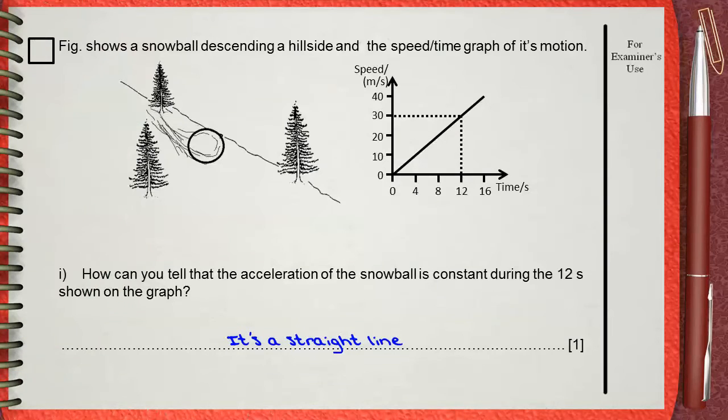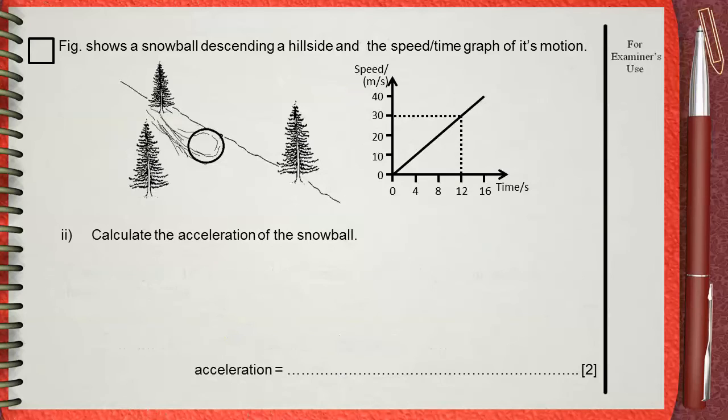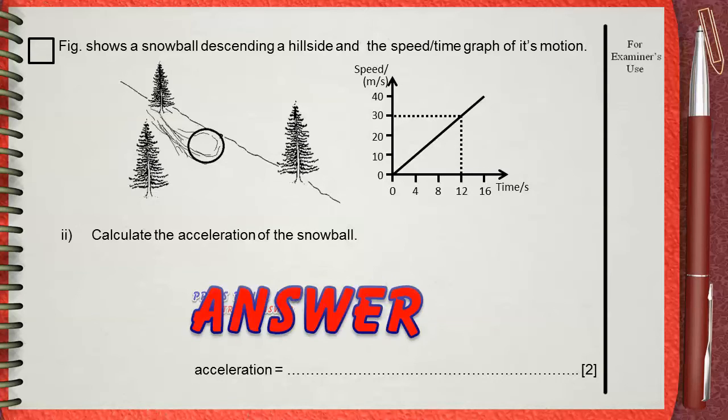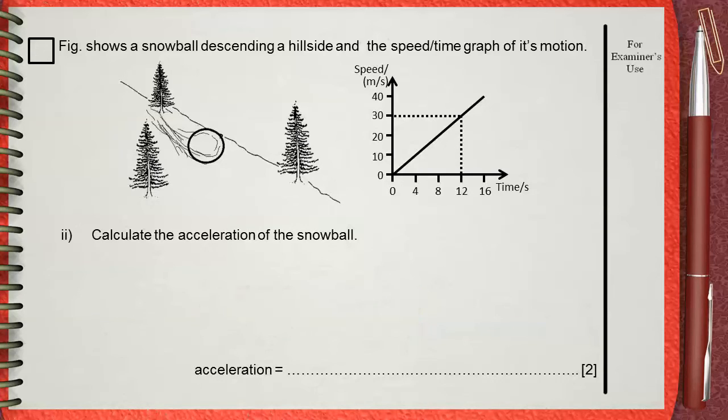Question number 2: Calculate the acceleration of the snowball. If you have a speed-time graph and you're asked for the acceleration, this is easy. Simply get the slope of the line. There are many ways to get the slope of the line.